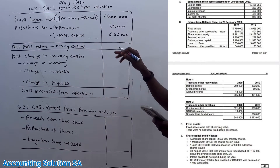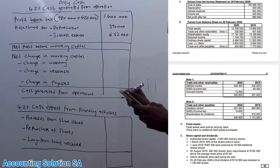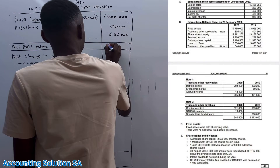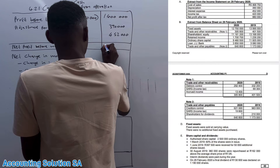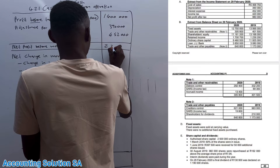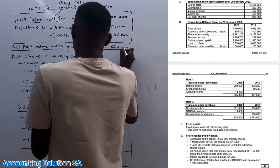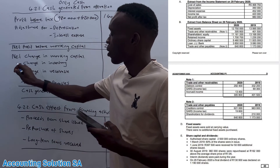After those adjustments, you arrive at what we call 'net profit before working capital changes.' If you add all of them together, you get an amount of 2,242,000.